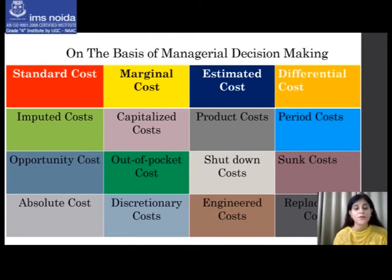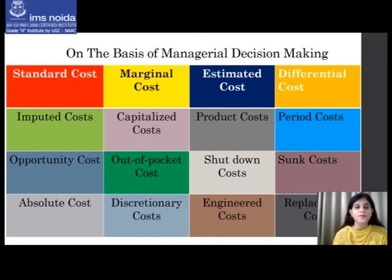Differential cost, also called incremental or decremental cost, represents the change — increase or decrease — in total cost, both variable and fixed, due to a change in activity level, technology, process, or method of production. Imputed costs are notional costs which do not involve any cash outlay — for example, interest on capital for which payment is not actually made; these are similar to opportunity costs. Capitalized costs are initially recorded as assets and subsequently treated as expenses — for example, installation expenses on a machine are added to the cost of that machine.